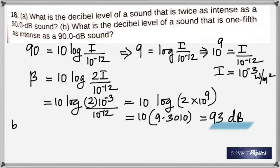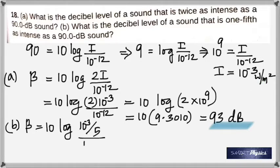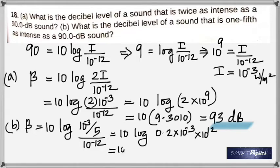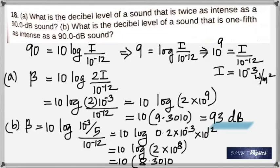And the B part says, what is the decibel level of a sound that is one-fifth as intense. So same procedure, one-fifth as intense. Take one-fifth of this quantity now. 10 to the negative 3 divided by 5 and that comes out to be 0.2 times 10 to the negative 3 times 10 to the 12. That is 83 decibels. One-fifth is 83 decibels.